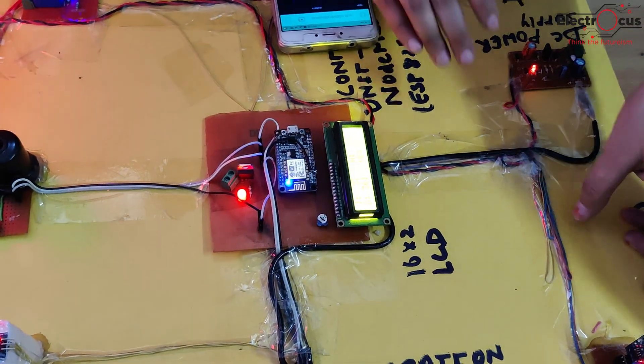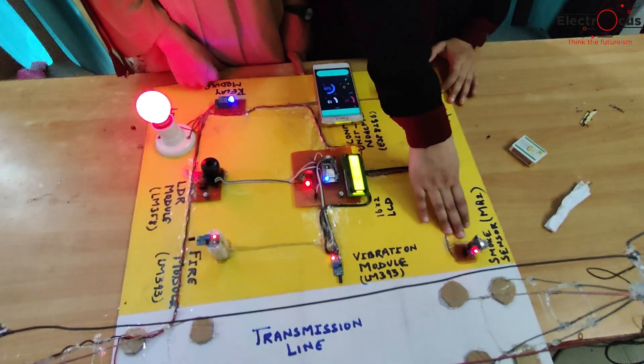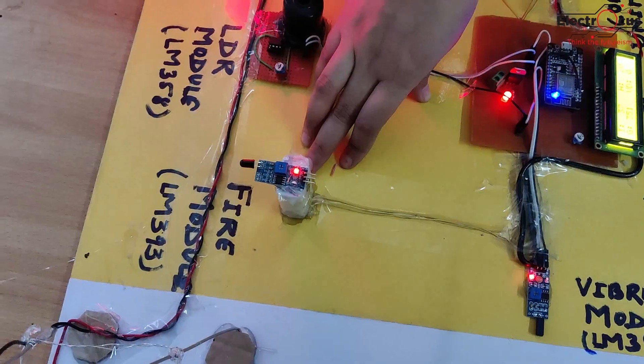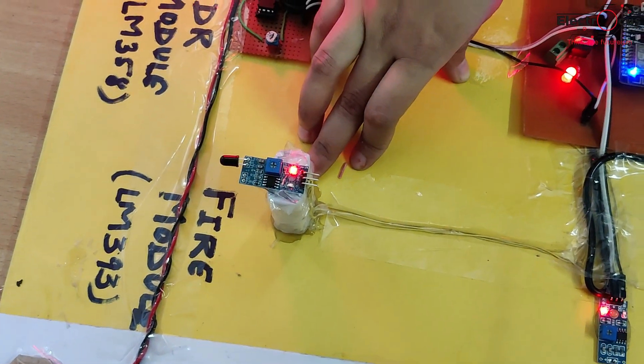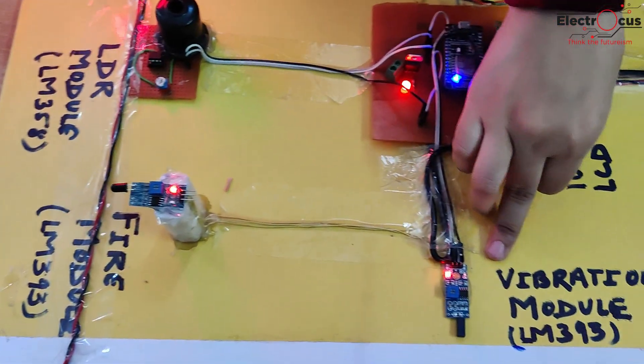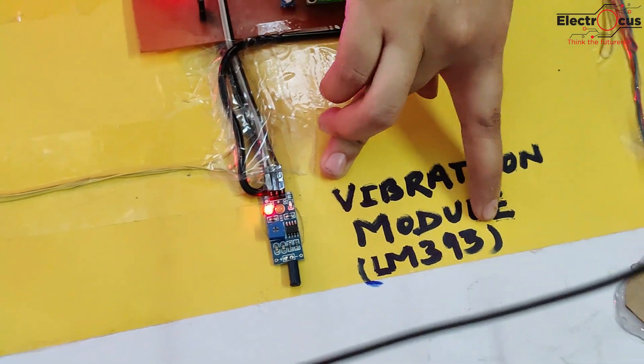These are different types of sensors which are used here. This is a smoke sensor, MQ2. This is a fire module which uses the IC LM393. This sensor is basically used for fire detection. This is a vibration sensor which also uses IC LM393.